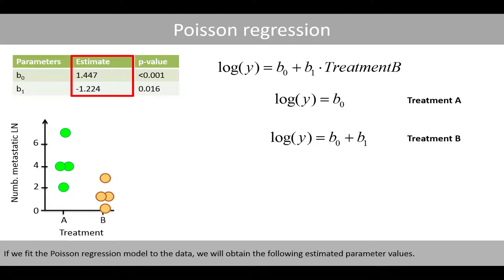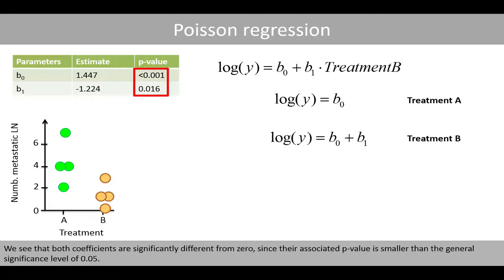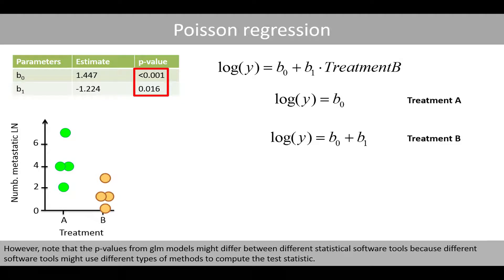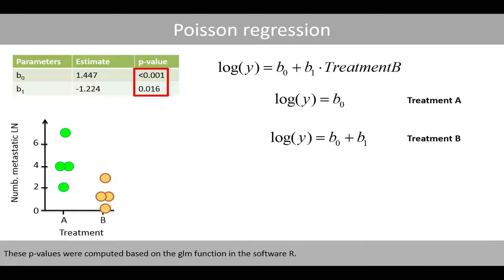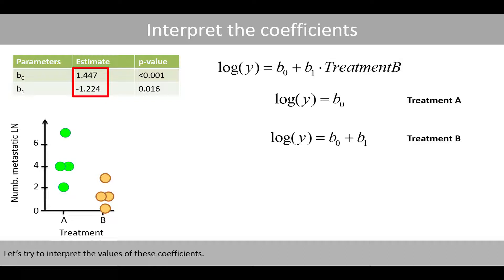If we fit the Poisson regression model to the data, we will obtain the following estimated parameter values. We see that both coefficients are significantly different from zero, since their associated p-value is smaller than the general significance level of 0.05. Note that p-values from GLM models might differ between different statistical software tools, because different tools might use different methods to compute the test statistic. These p-values were computed based on the GLM function in the software R. Let's try to interpret the values of these coefficients.